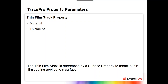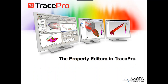The thin film stack property is where you define a material and a thickness. The thin film stack is referenced by a surface property and is used to model a thin film coating applied to a surface. The material option lets you pick any material in the TracePro database — for example, the coatings catalog includes materials like magnesium fluoride, silicon monoxide, and other coating materials.